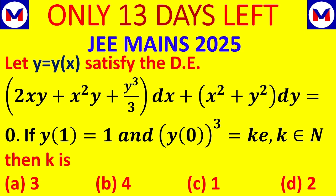The question is: let y = y(x) satisfy the differential equation (2xy + x²y + y³/3)dx + (x² + y²)dy = 0. If y(1) = 1 and y(0)³ = k·e where k belongs to natural numbers, then k is: 3, 4, 1, or 2.